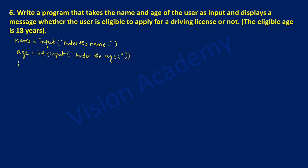Now we will use an if condition to check whether the user is eligible for the driving license or not. Here age is greater than or equal to 18, because the eligibility age is given in the question itself. After writing 18 we need to put a colon as per the syntax of the if statement. Any executable statements under if must be given one space or tab space.